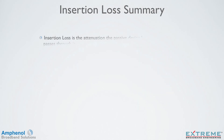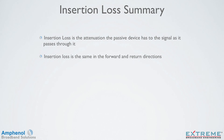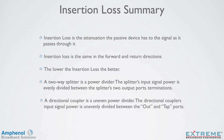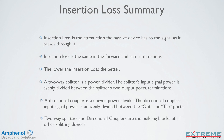Let's review what we learned in this training session on insertion loss. Insertion loss is the attenuation the passive device has to the signal as it passes through it. Insertion loss is the same in the forward and return directions. The lower the insertion loss, the better. A two-way splitter is a power divider — the splitter's input signal power is evenly divided between the splitter's two output ports. A directional coupler is an uneven power divider — the input signal power is unevenly divided between the out and tap ports. Two-way splitters and directional couplers are the building blocks of all other splitting devices.